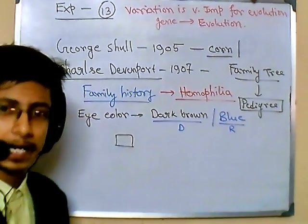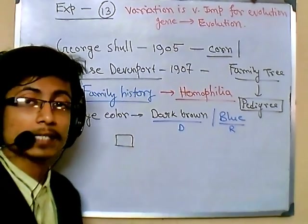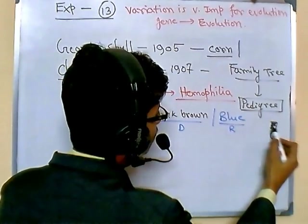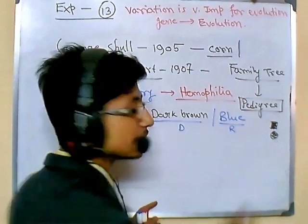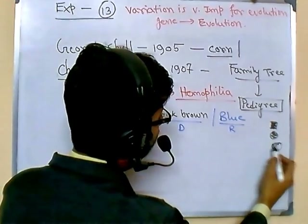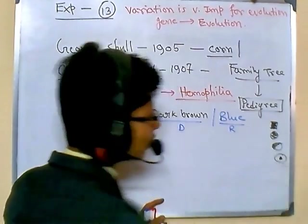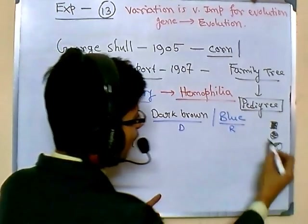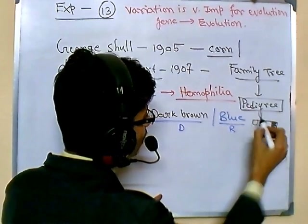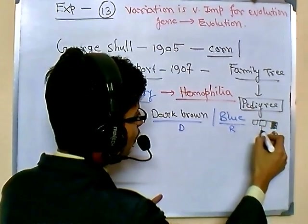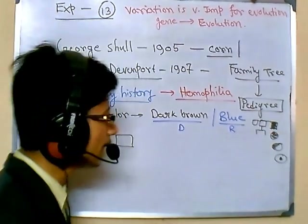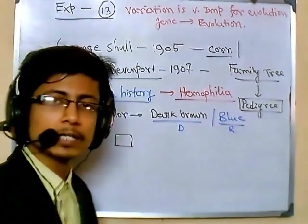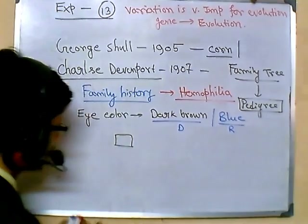According to pedigree construction rules: a box means male, a circle means female, a completely filled box or circle means affected or diseased, a half-filled symbol means carrier, and siblings are connected by the same horizontal line. A vertical line connecting two individuals indicates marriage or mating.